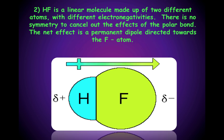Second, HF is a linear molecule made up of two different atoms with different electronegativities. There is no symmetry to cancel out the effects of the polar bond. The net effect is a permanent dipole directed towards the fluorine atom. In order for a molecule to be polar, there can be no symmetry to cancel out the effects of the polar bonding.